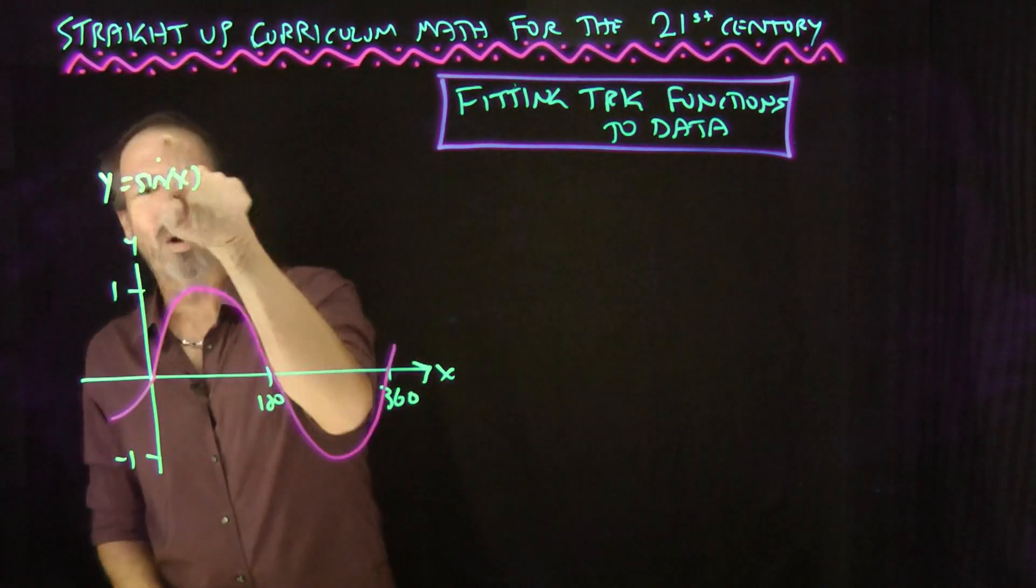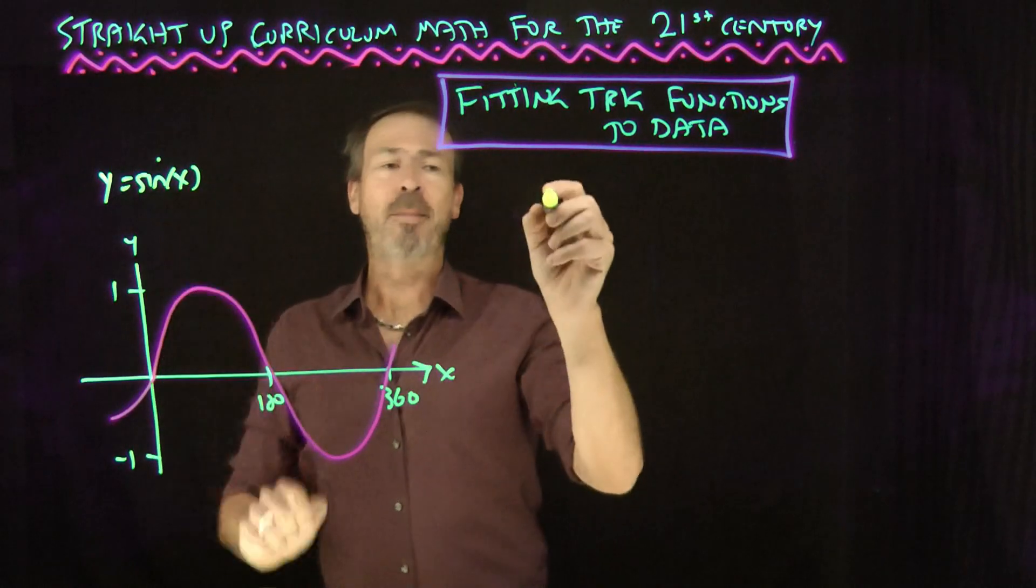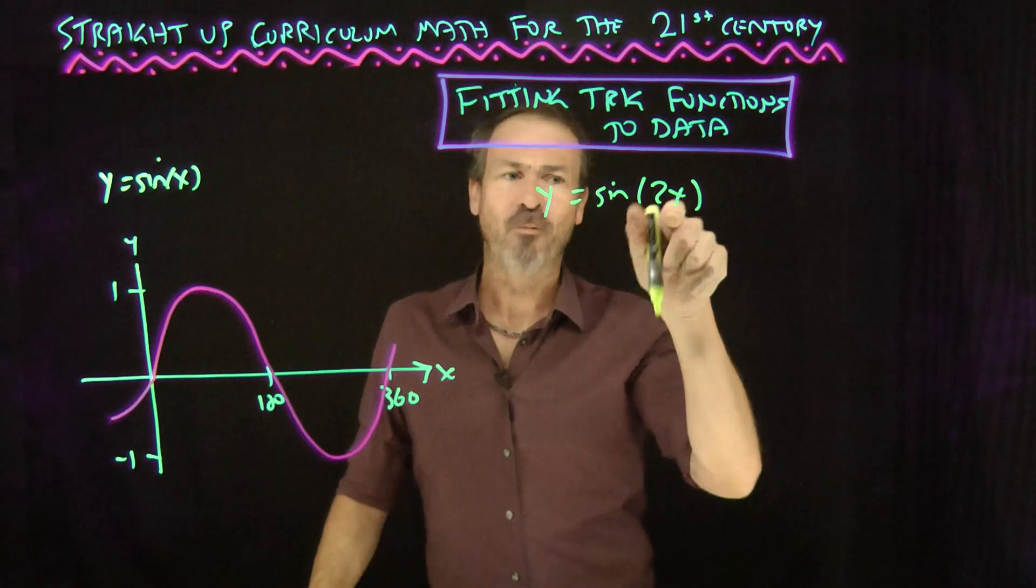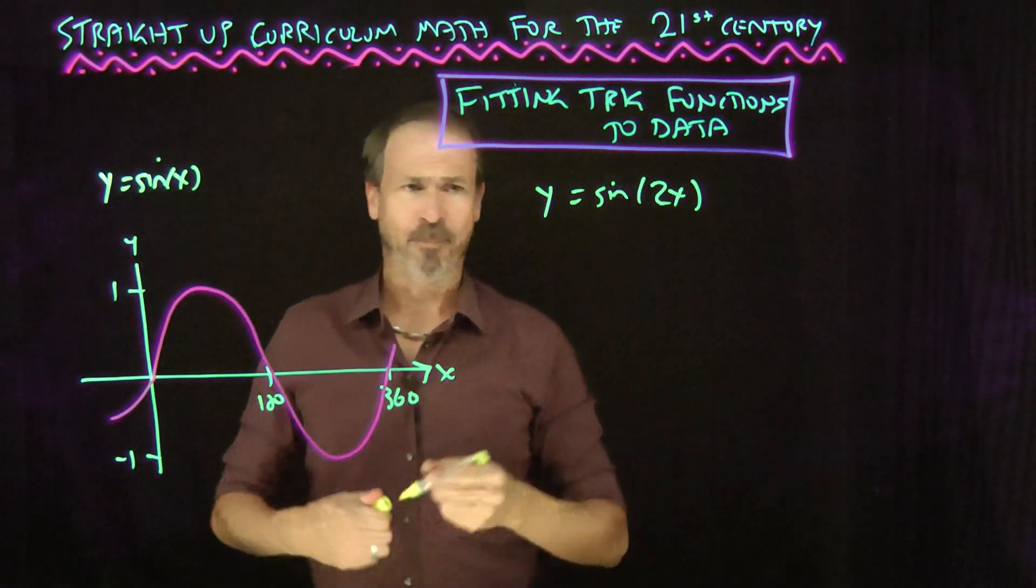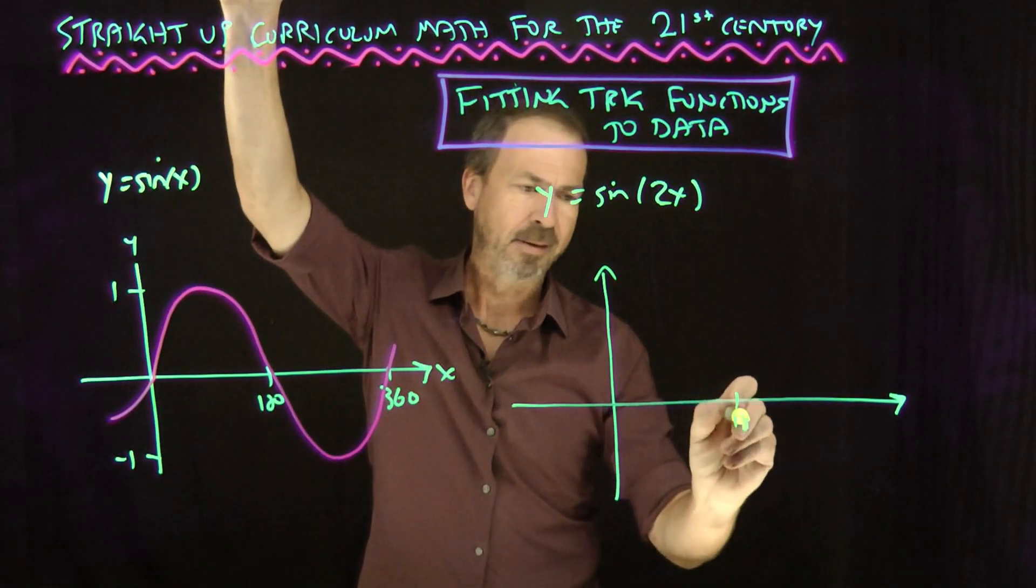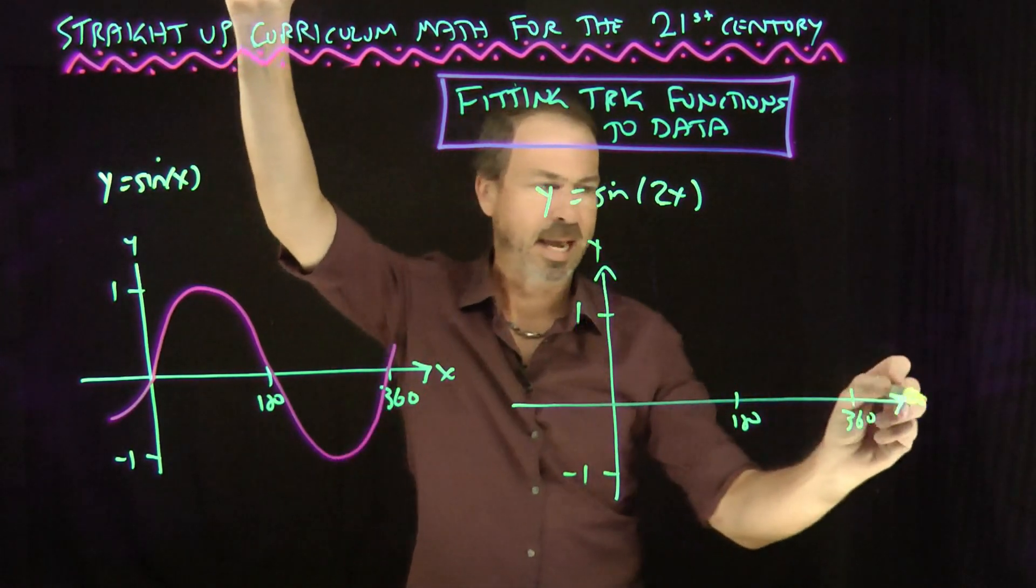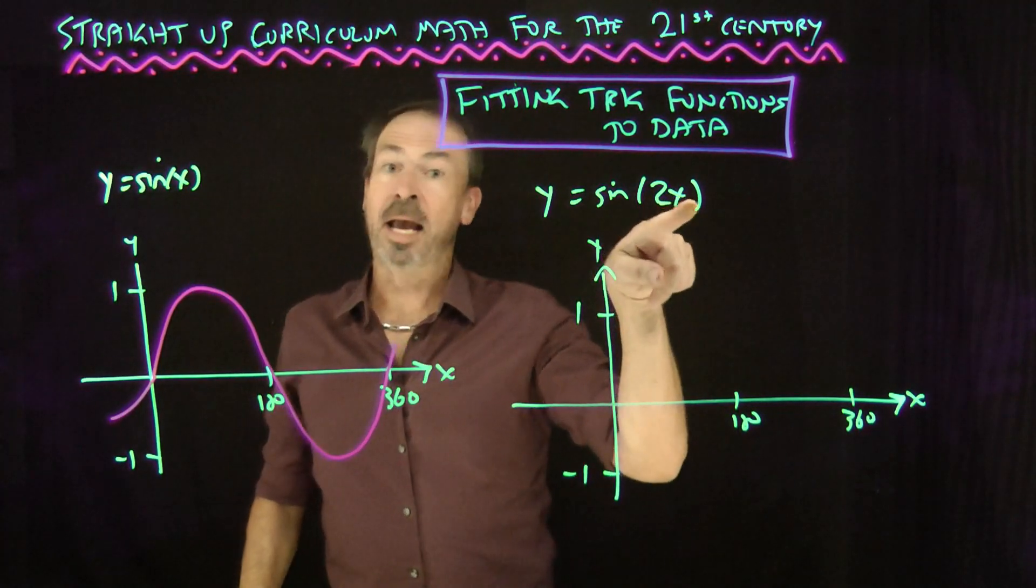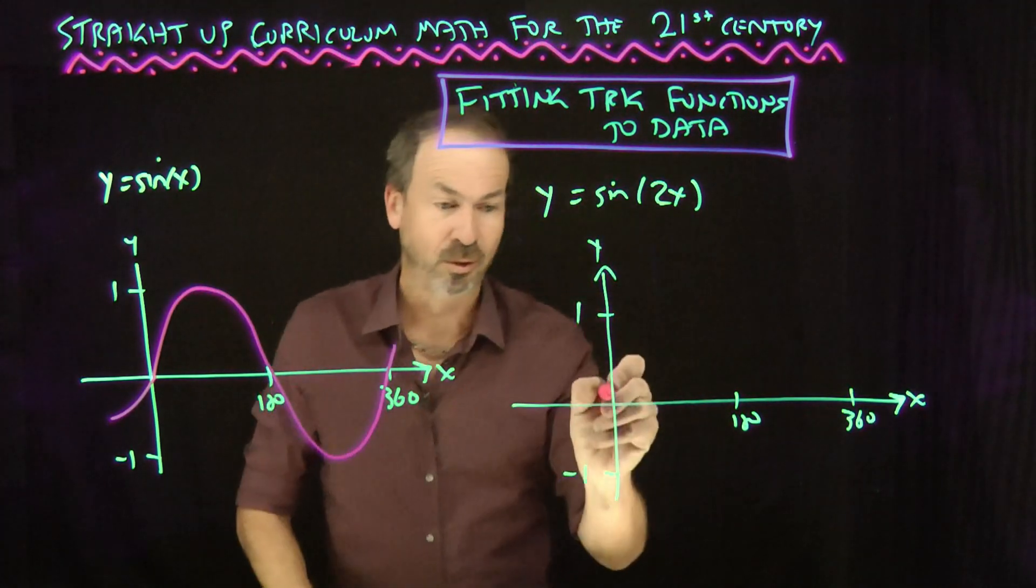Let me start messing around with the formula and see if we can see what happens geometrically. For example, what if I doubled the x values, made it y equals sine of 2x, make them race through things twice as fast. But what does that do geometrically? Well, that will give me a graph that looks like this.